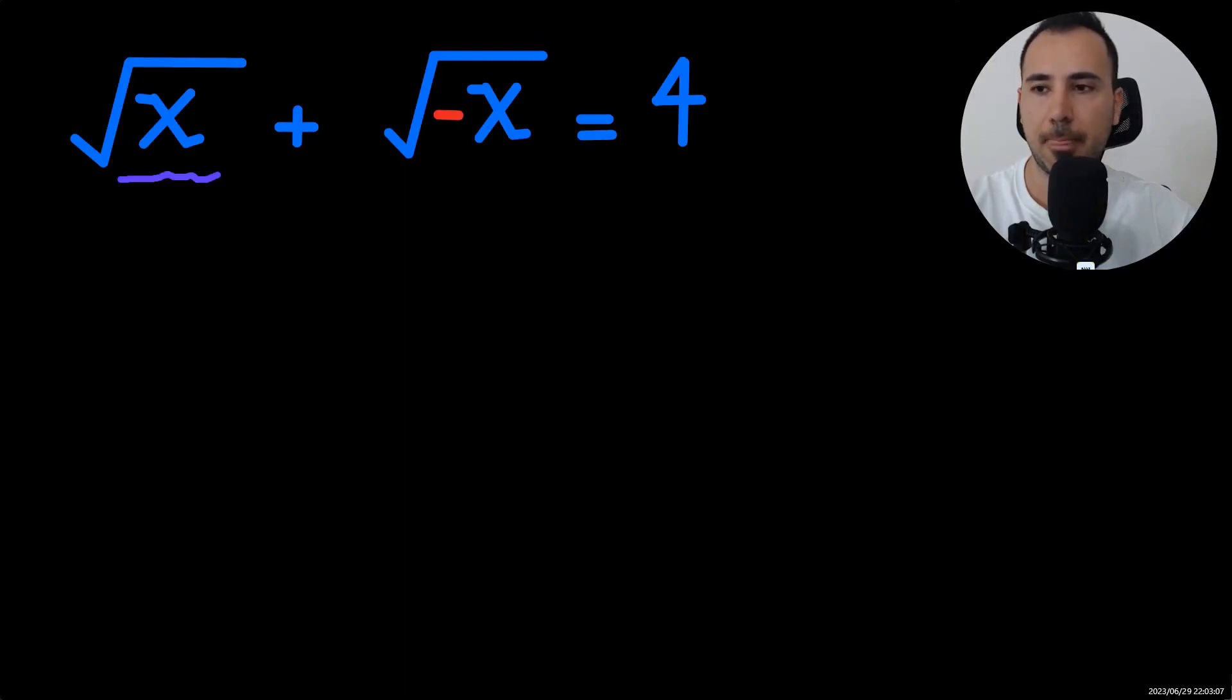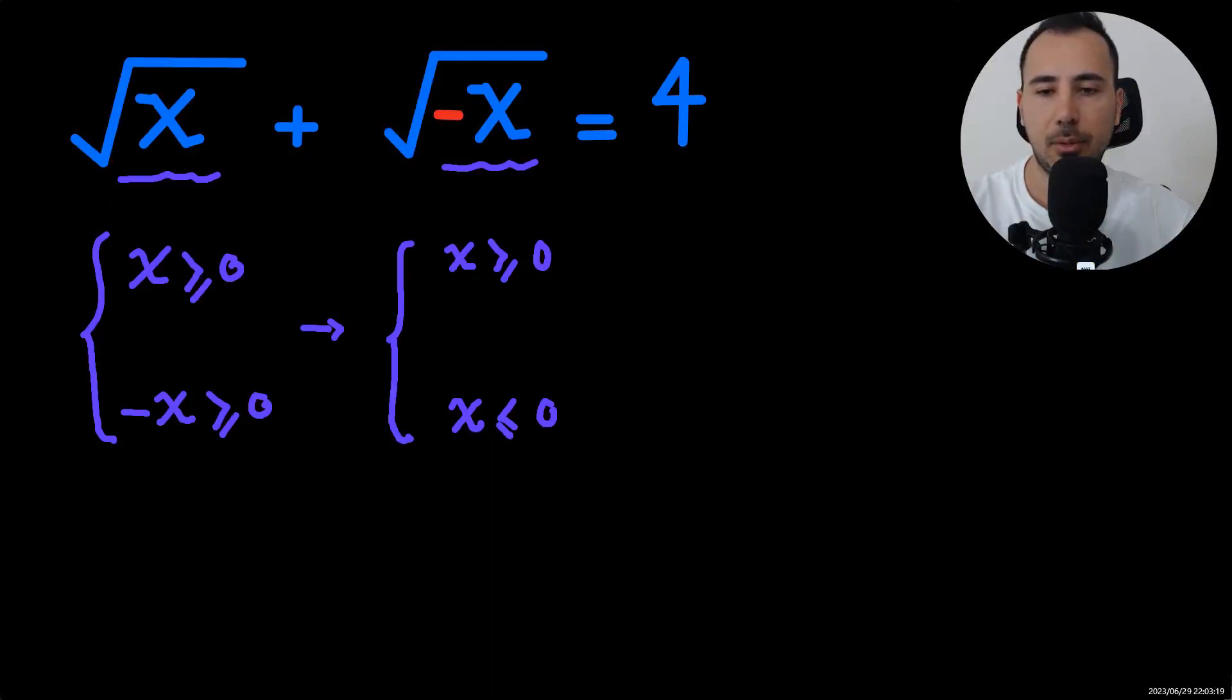Which results in, if x is greater or equal to 0 and also smaller and equal to 0, so this results in x only being equal to 0.